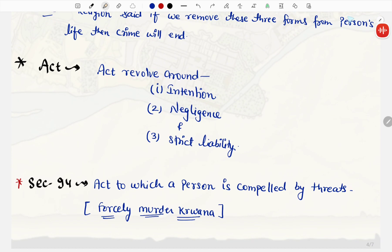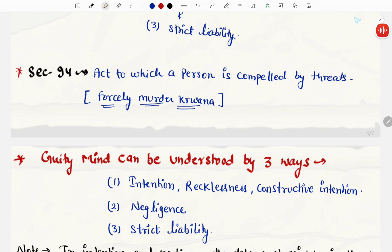Doosra word, jo humne use kiya, Act. Act revolves around intention, negligence, and strict liability. Jo bhi act hai, woh in teen chizo ke around revolve karta rheta hai. Iske baad hai section 94. IPC ka section 94 bataata hai, act to which a person is compelled by threats. Forcely murder karwana. Aapne forcely kisi aur ka hath pakad ke, kisi ko shoot kar diya. This is act to which a person is compelled by threats, jo ki section 94 ke andar mention hai.